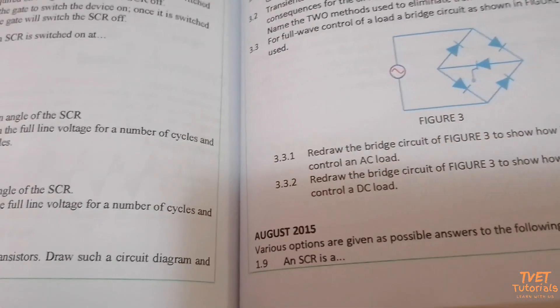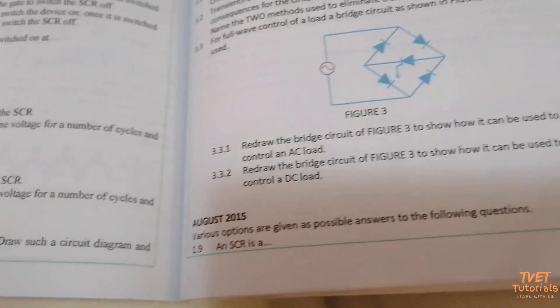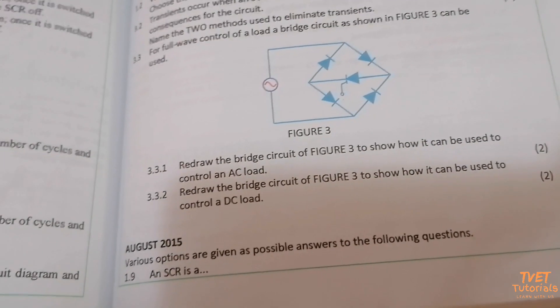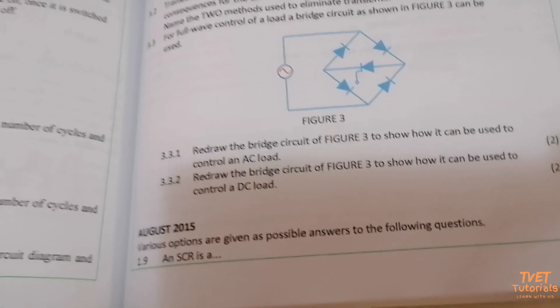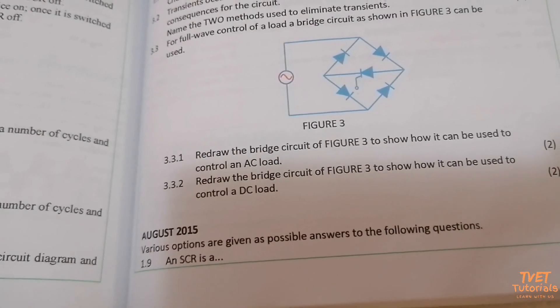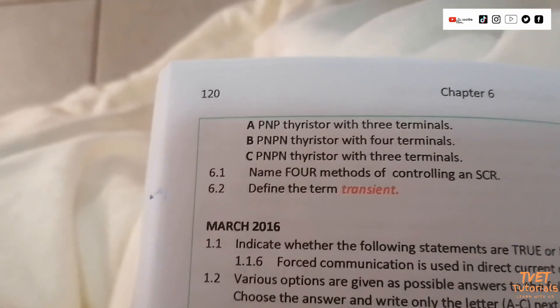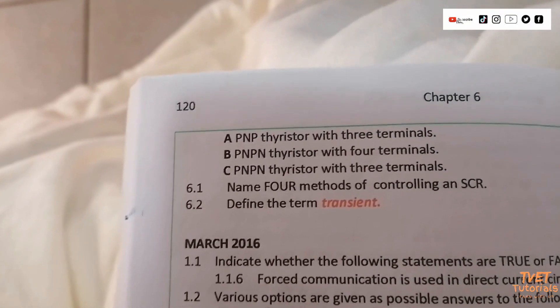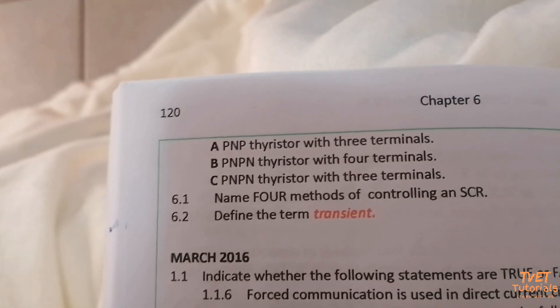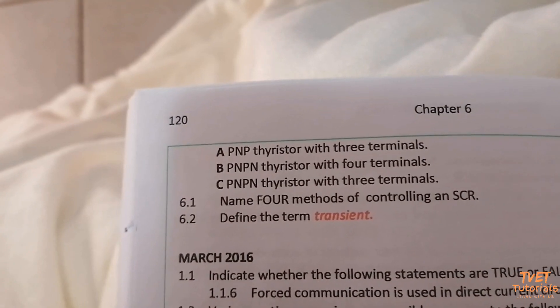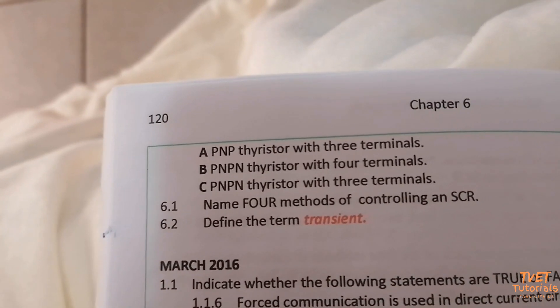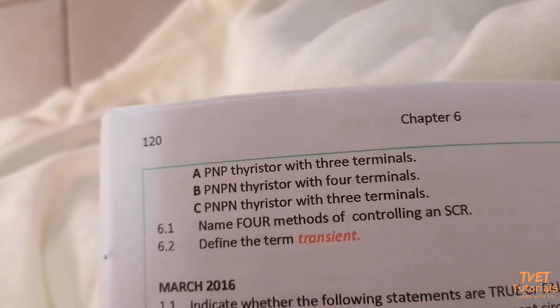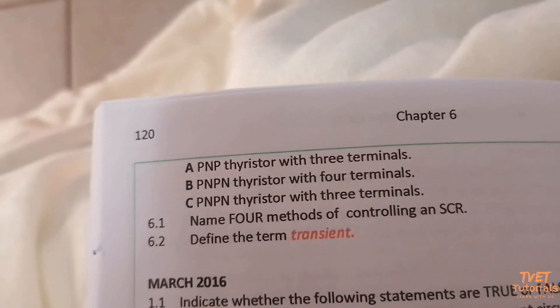April 2015 multiple choice question 1.9: 'An SCR is a...' The correct answer is option C — it is formed by two transistors and has three terminals. Question 6.1: name the methods used for controlling an SCR.